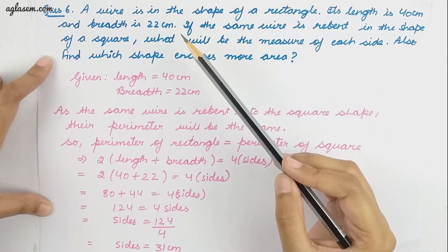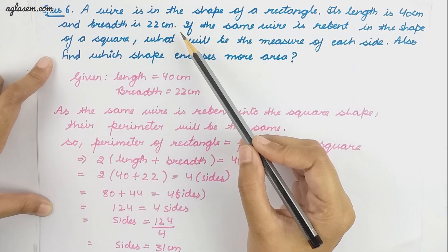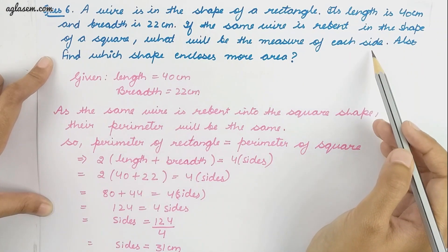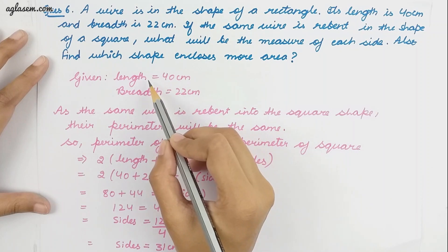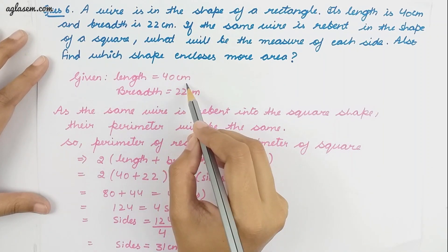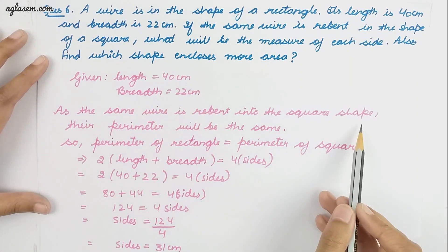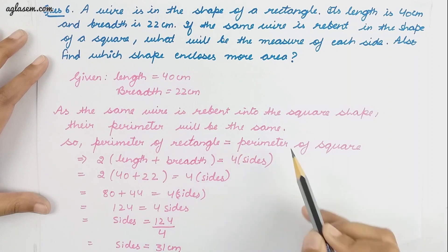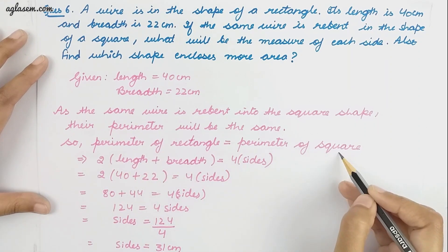Our next question: a wire is in the shape of a rectangle with length 40 centimeter and breadth 22 centimeter. The same wire is re-bent into a square shape, so the perimeter will be the same. If the same wire is re-bent in the shape of a square, what will be the measure of each side? Also find which shape encloses more area. Since the perimeter of rectangle equals perimeter of square, we use 2 into length plus breadth equals 4 into side.